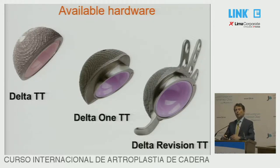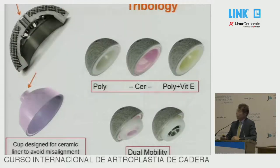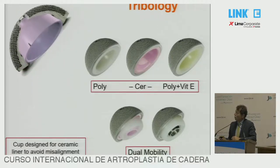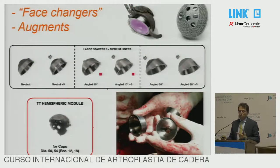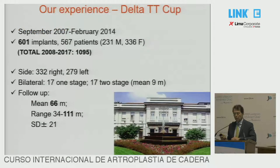Let's jump into our surgical field. This is the available hardware. These are the commercial names of these cups: Delta Trabecular Titanium, Delta I. Delta I is a cup that can be used in the revision setting with the phase changer, and Delta revision cup. All of them can carry different bearing surfaces, such as ceramic or polyethylene, polyethylene with vitamin E, and you can also have a dual mobility version of the cup. These are the phase changers and these are the augments. You can really use this cup with the augments or the version with the hook and fins to address major defects on the acetabular side.